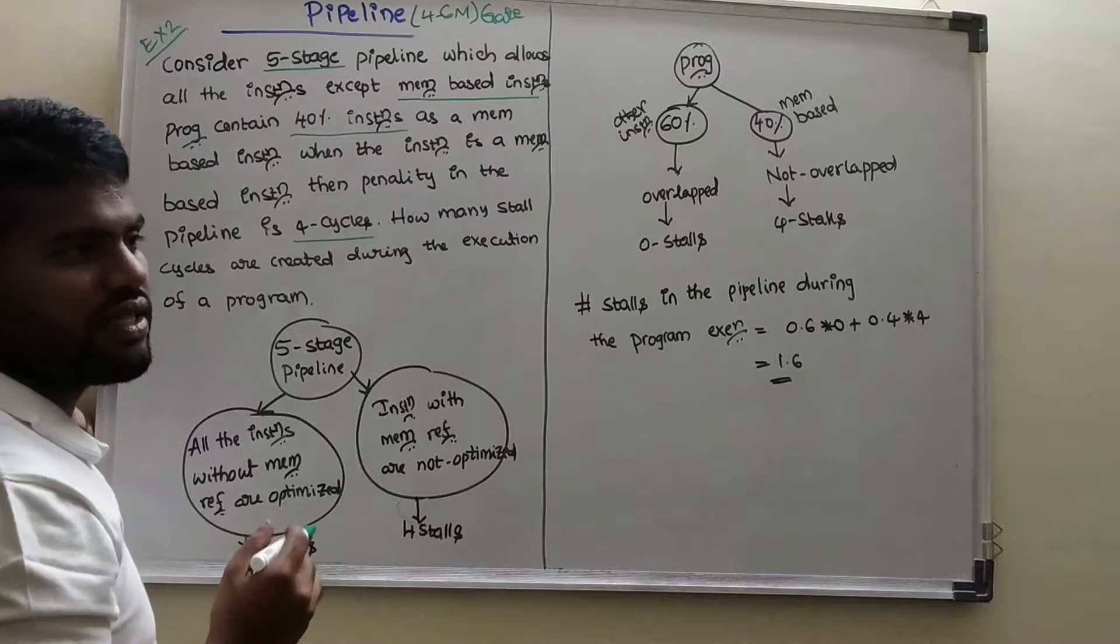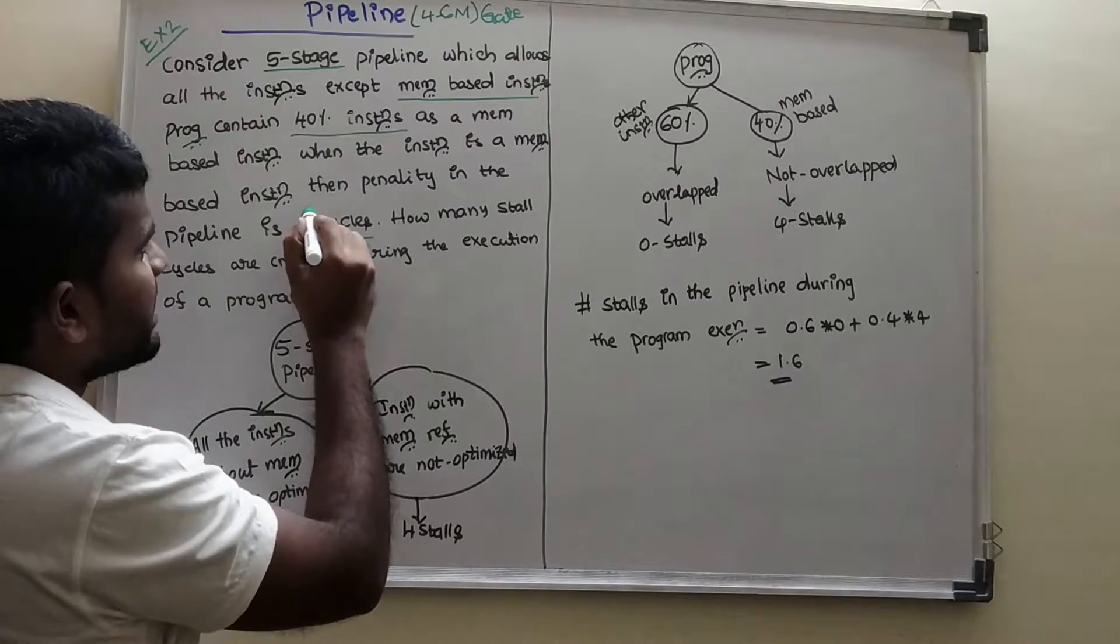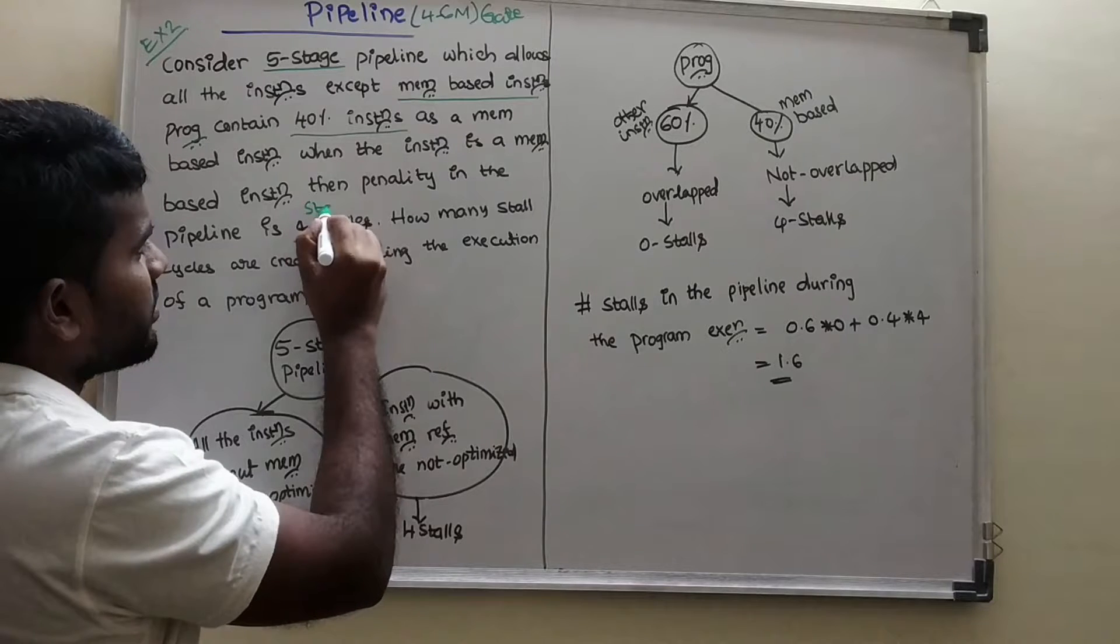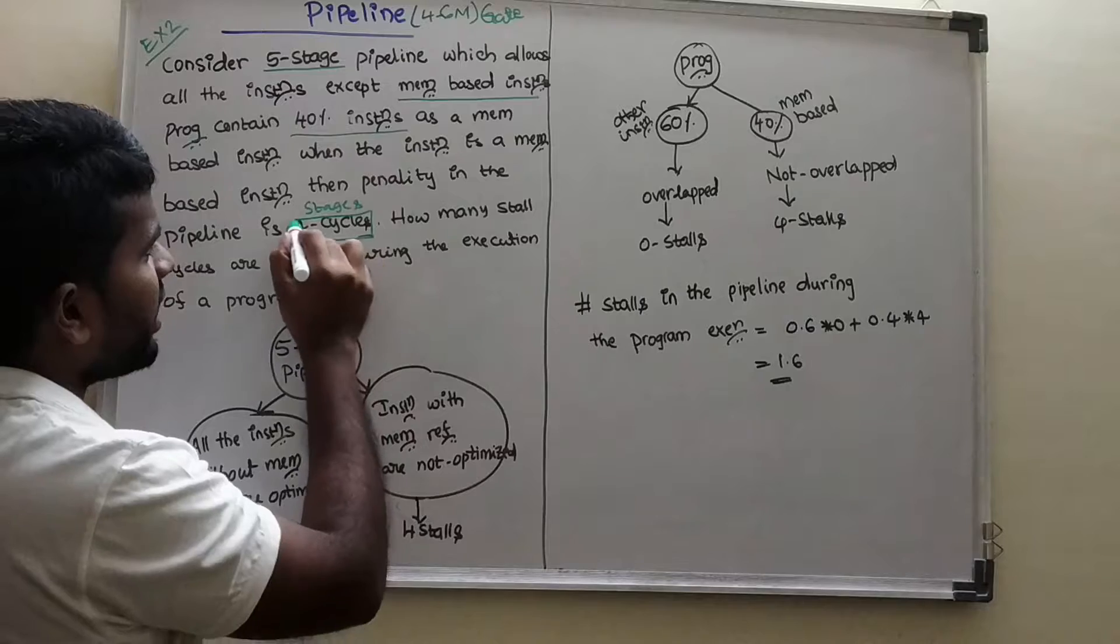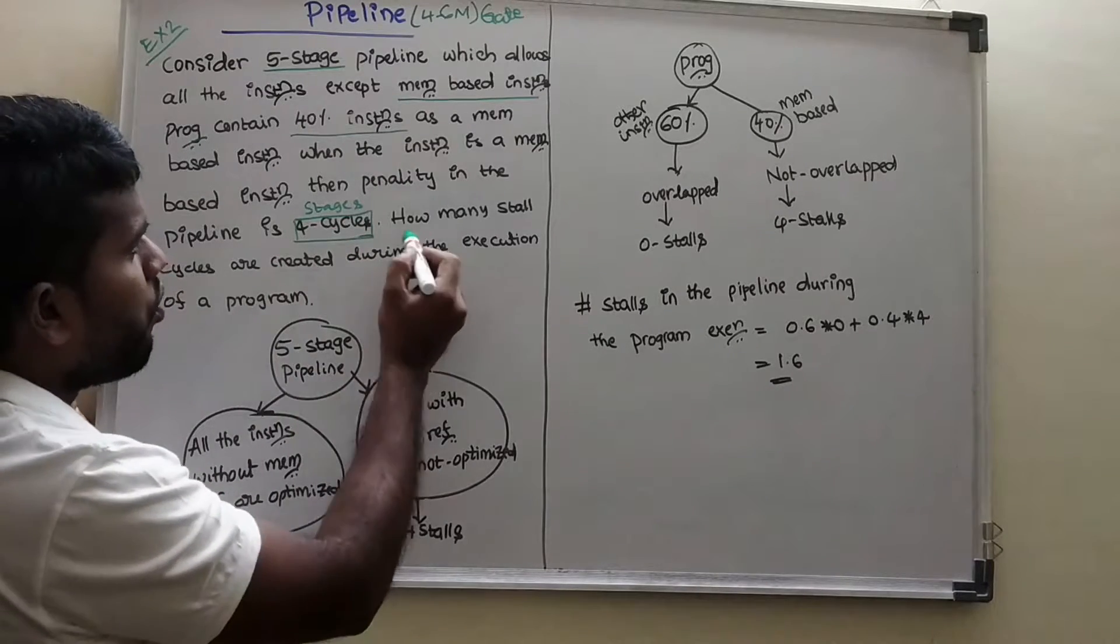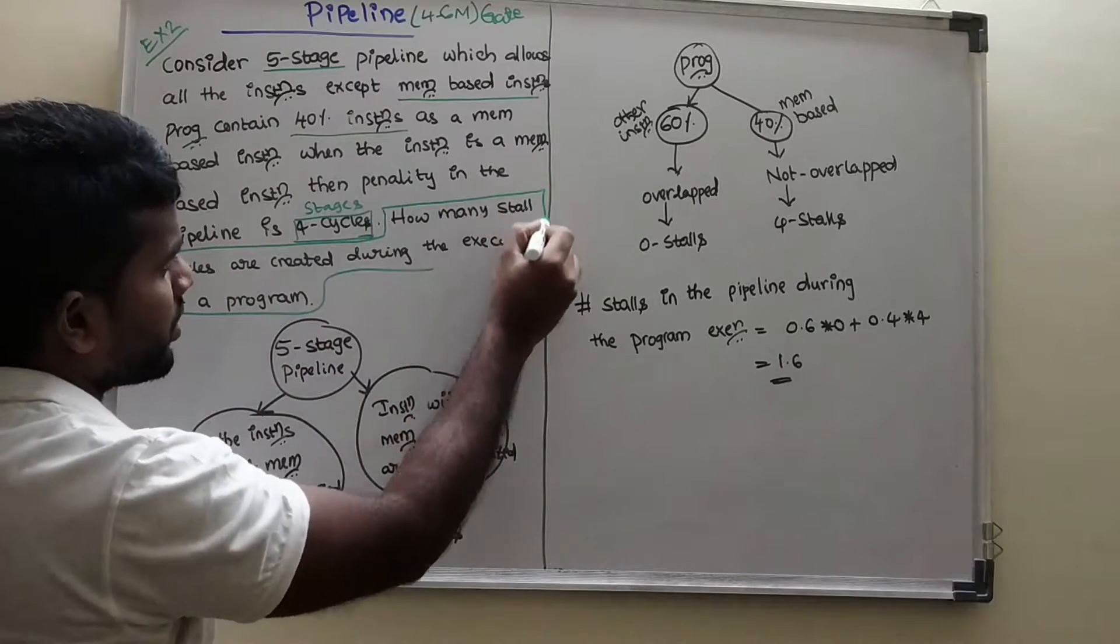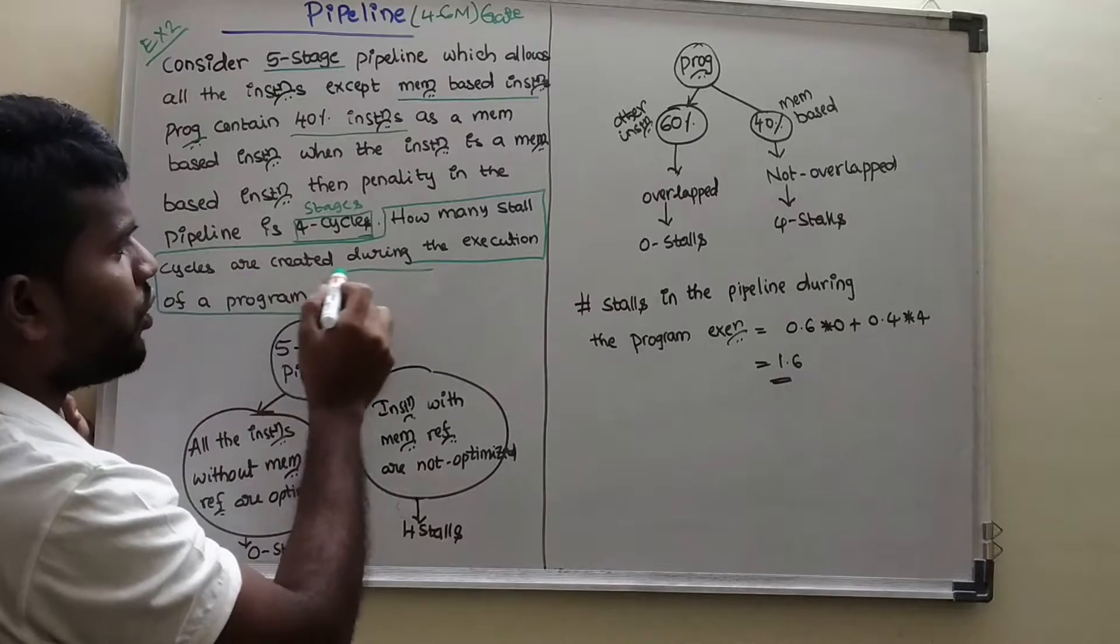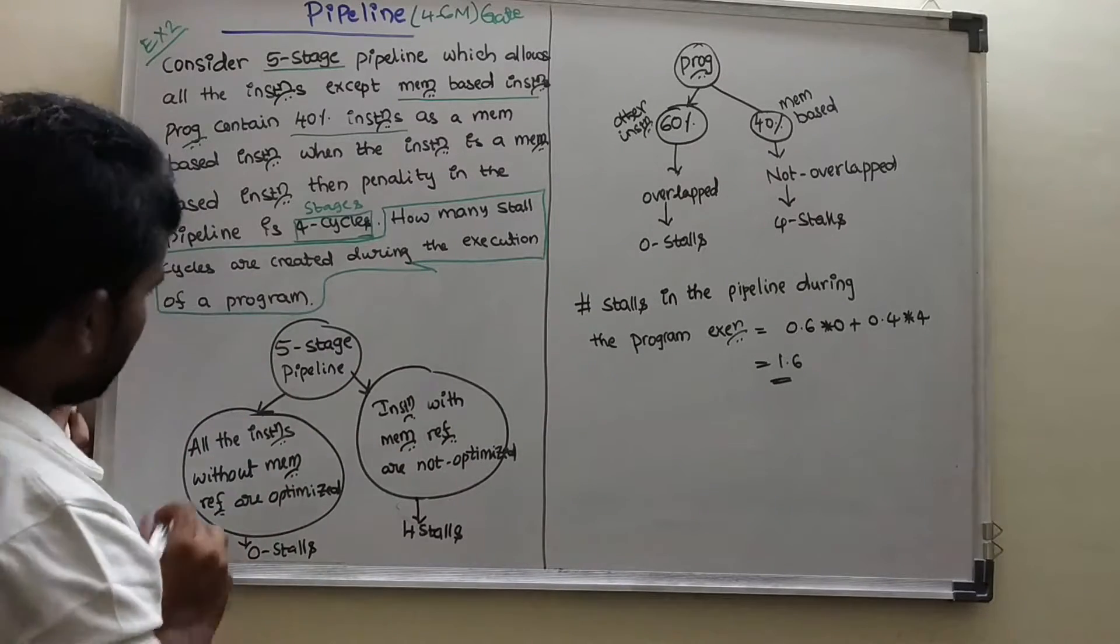See, observe that in previous example they talked about pipeline stages. They given here stages. Here they said directly 4 cycles. Penalty will be directly 4 cycles, or you can say 4 stalls. How many? This is the question.